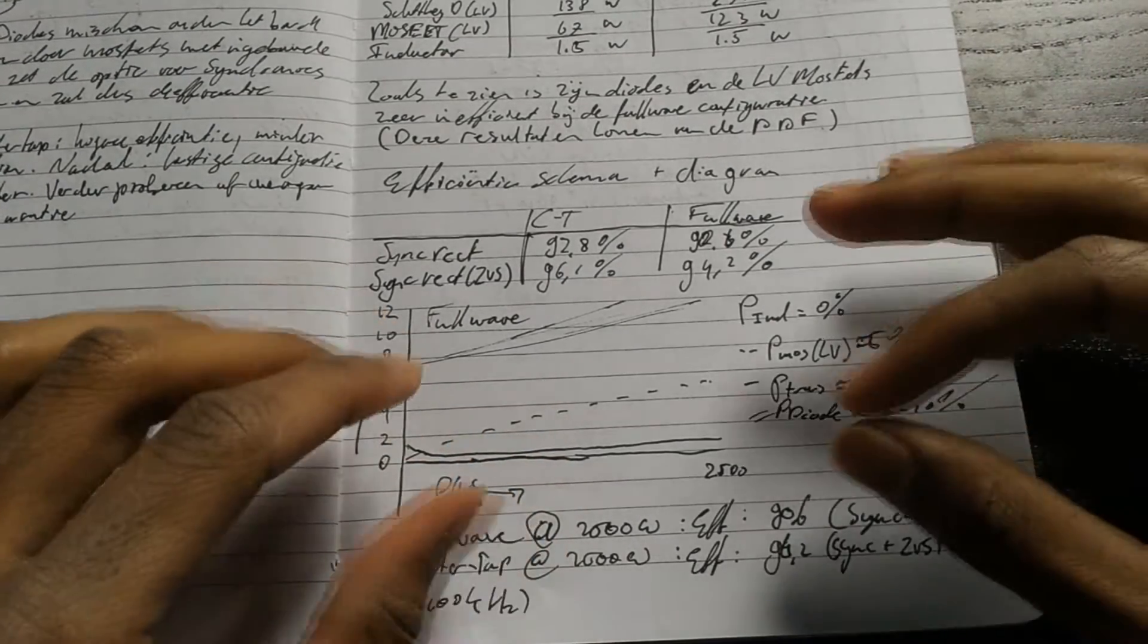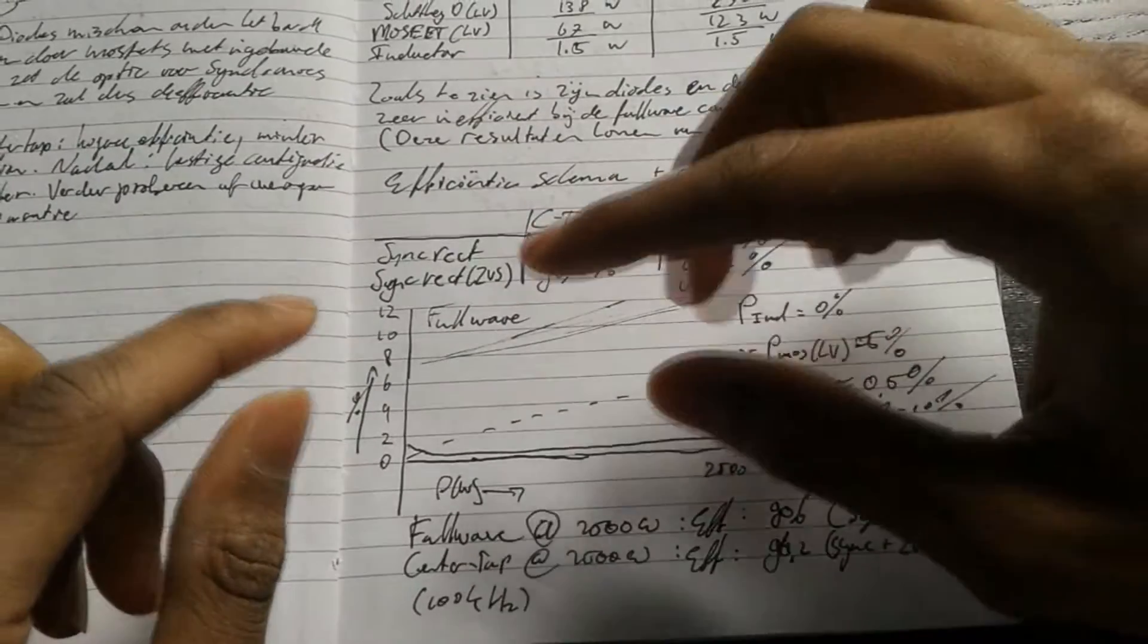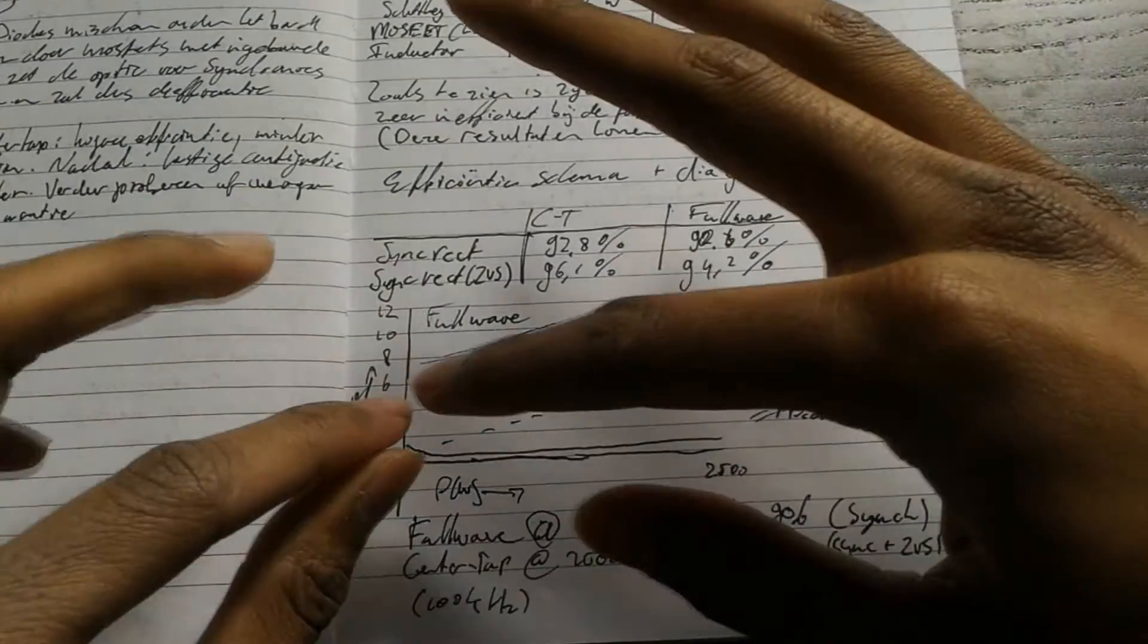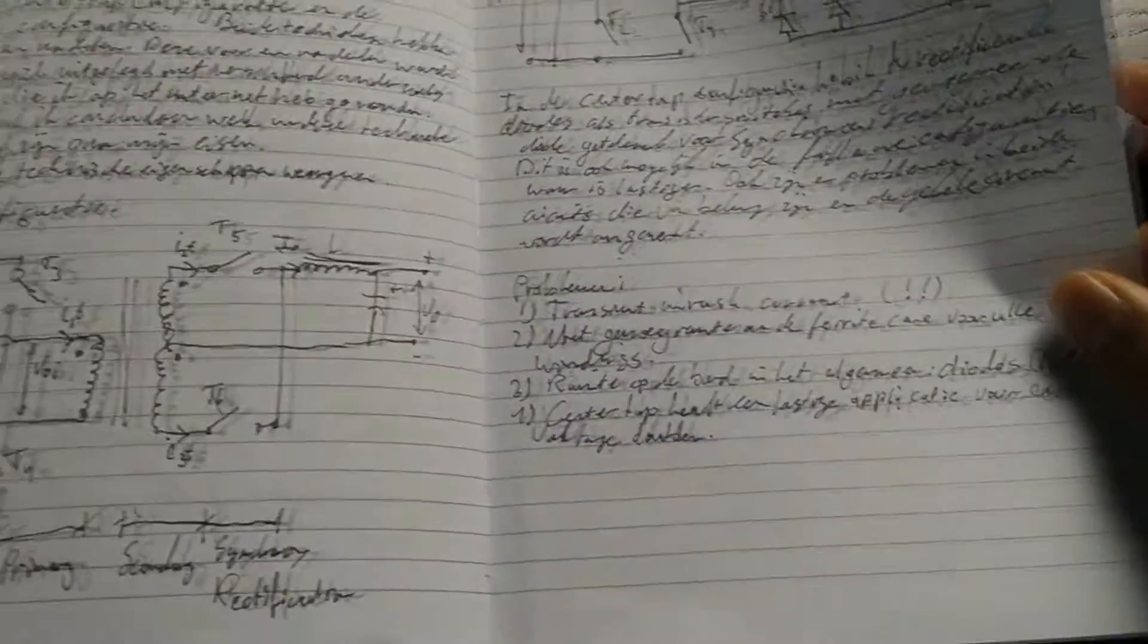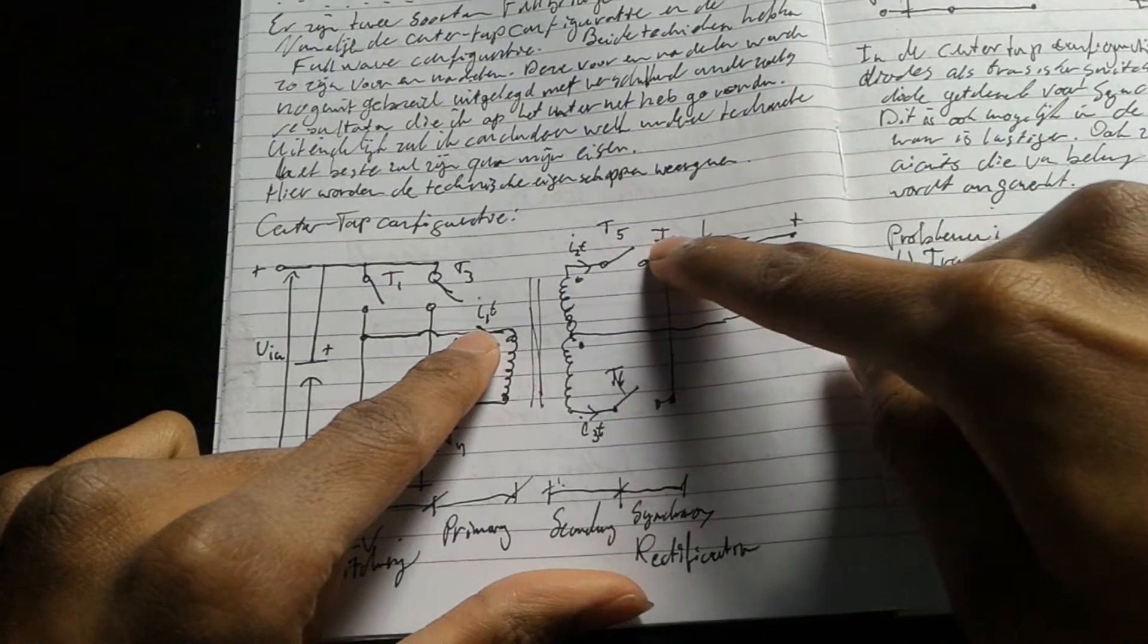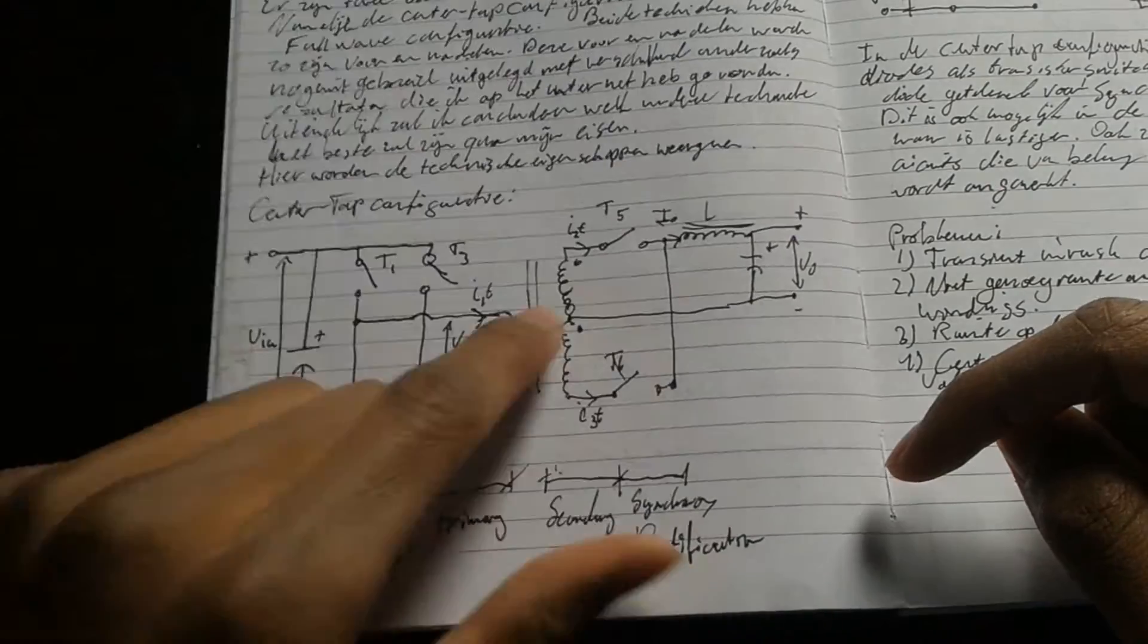What synchronous rectification does is that it's just turning on when the half cycle passes. For example, if you take the positive side, it turns on, and the negative side turns on, it's as simple as that.